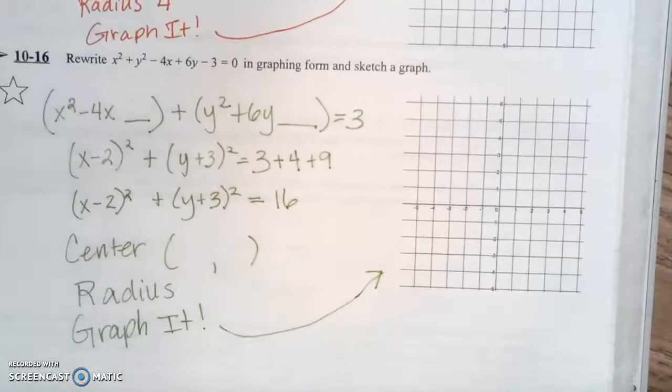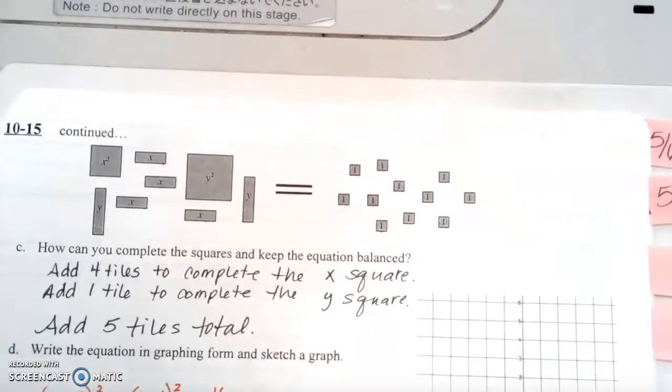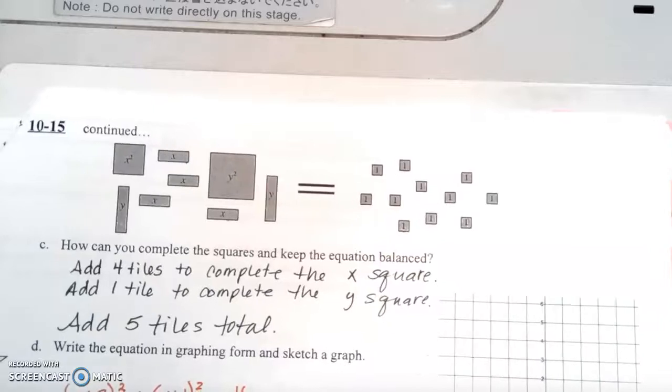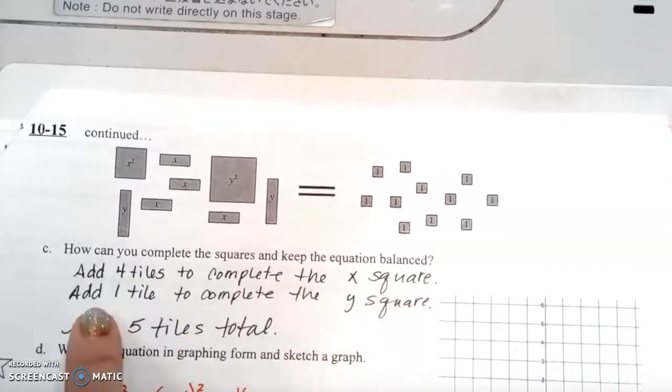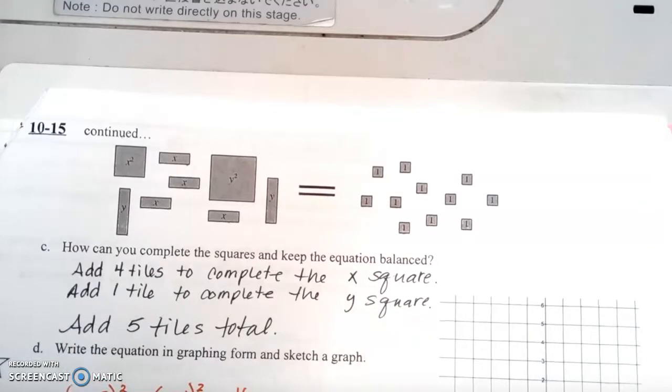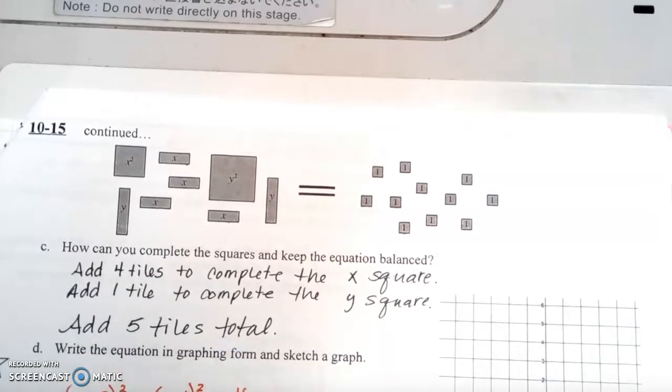All right, flip over to the top of page 5. Up at the top of page 5, it says, how can you complete the squares and keep the equations balanced? So you're going to add 4 tiles to complete the x square, 1 tile to complete the y square, and add the 5 tiles total.